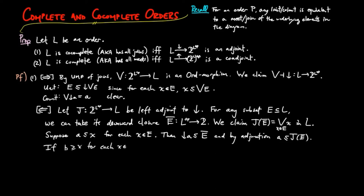We have A is less than or equal to J evaluated on E bar. If B is greater than or equal to X for each X in E, then the lower segment on X is less than or equal to the lower segment on B, since the lower segment is a functor. And thus, E bar is less than or equal to the lower segment on B.